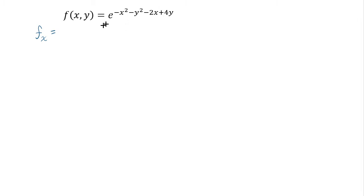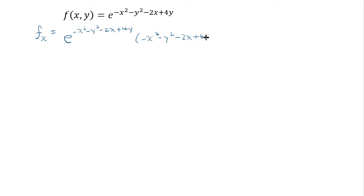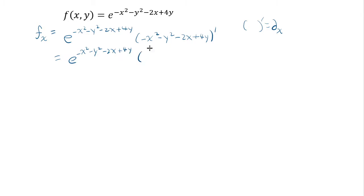If you differentiate this by x, it's a nested function where negative x squared minus y squared minus 2x plus 4y is the nested function. Using the chain rule, the inside must be pulled out and differentiated. Since we're doing the partial with respect to x, y squared and 4y are constants, leaving e to the (negative x squared minus y squared minus 2x plus 4y) times (negative 2x minus 2).